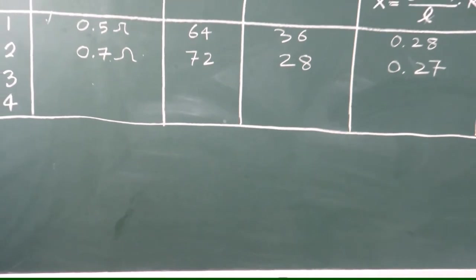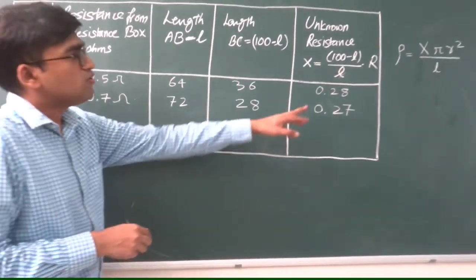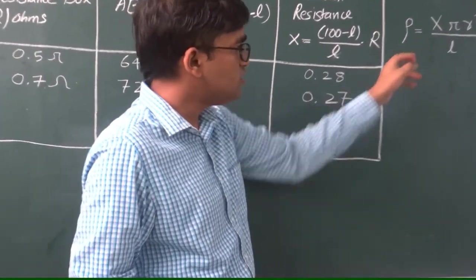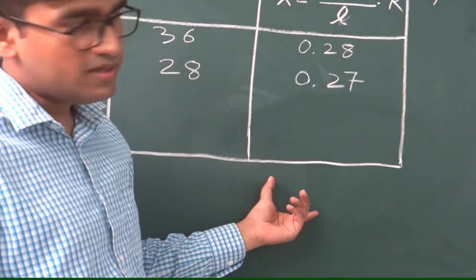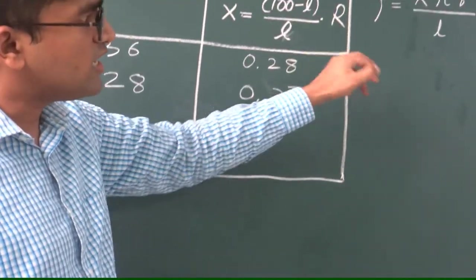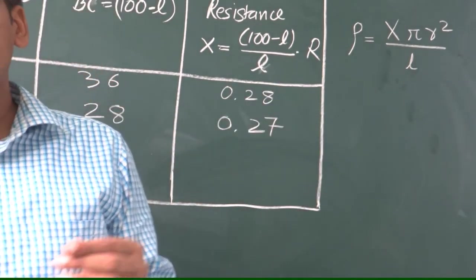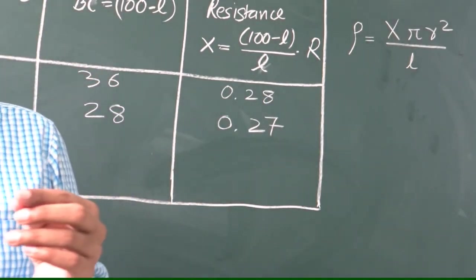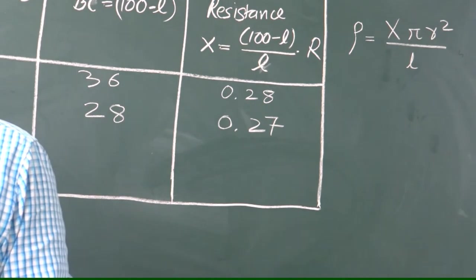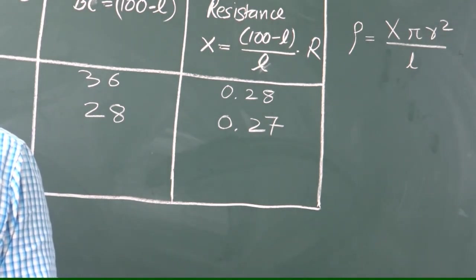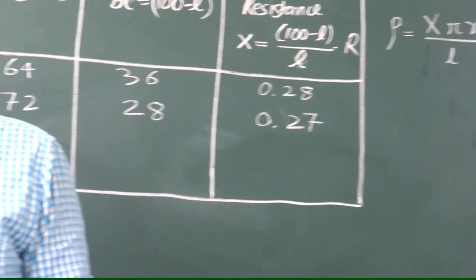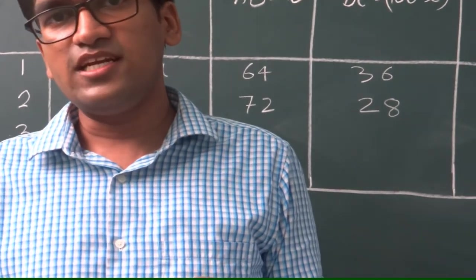Since you have determined both the values, now look at the formula. We know the value of x from this observation table. Substitute the value of r and value of the length. Since the wire which we are using is made up of constantin, the standard value should come out to be nearly above 49 into 10 to the power minus 8 ohm meter.